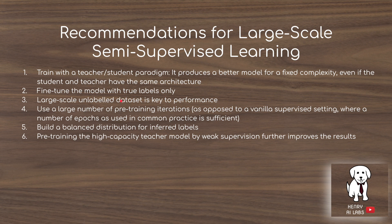The key driver behind this algorithm is having a billion Instagram images for training. Fourth, they use a large number of pre-training iterations for weakly supervised pre-training — more than normal supervised learning. Fifth, a novel contribution of this paper: use a balanced distribution for inferred labels during model distillation to avoid class imbalance. Sixth, pre-training the high capacity teacher model with weak supervision further improves results, which is what makes this the semi-weakly supervised learning framework.